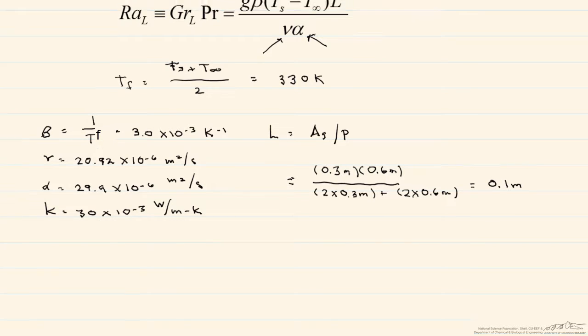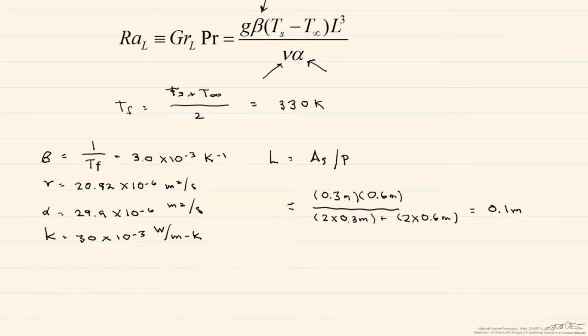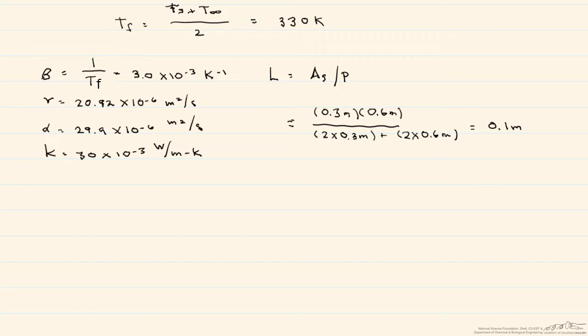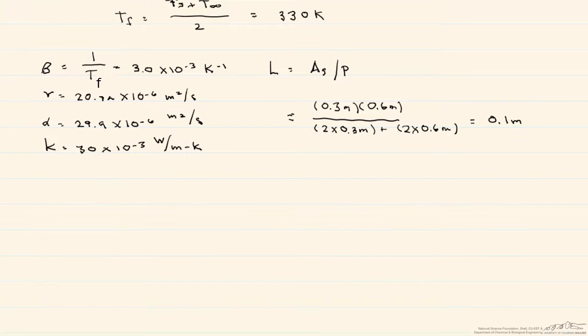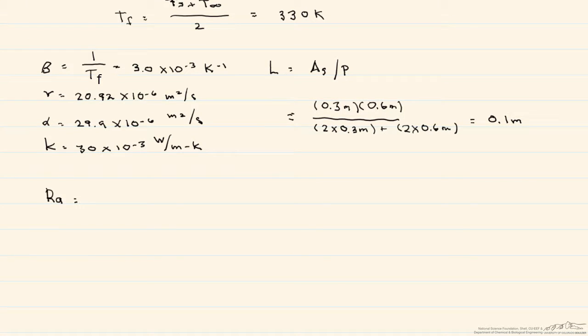Now let's go back and put all of these values into our Rayleigh number, and what we do, we end up with a Rayleigh number that's equal to 3.055 times 10 to the sixth.